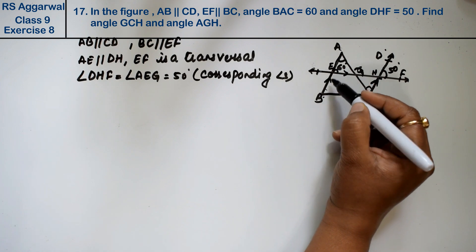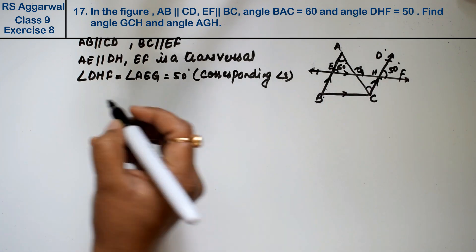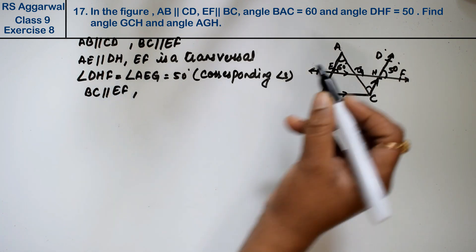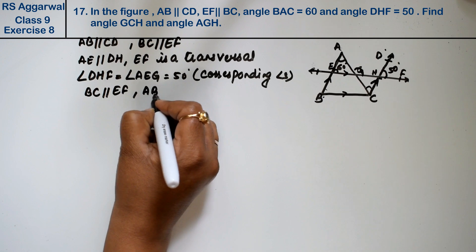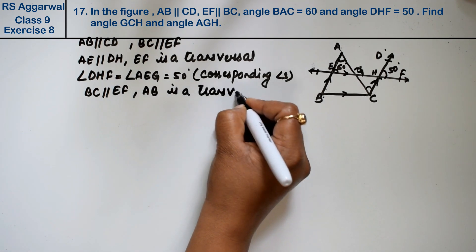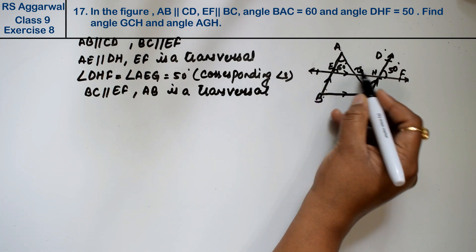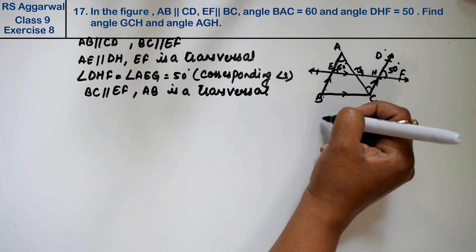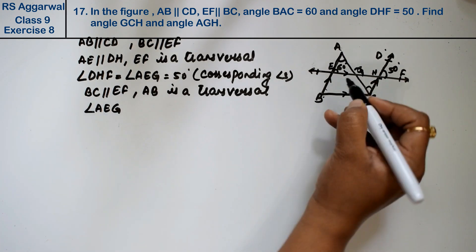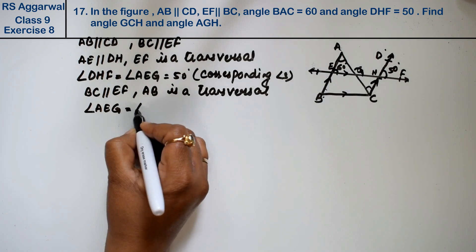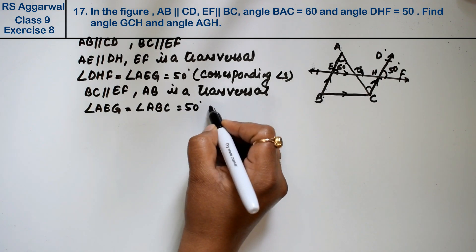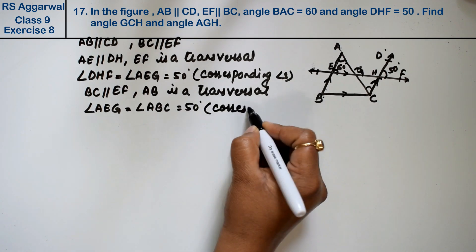This is 50 degrees, and this is also 50 degrees, because BC is parallel to EF. Now AB is the transversal. So angle AEG equals angle ABC — both are 50 degrees — because these are corresponding angles.